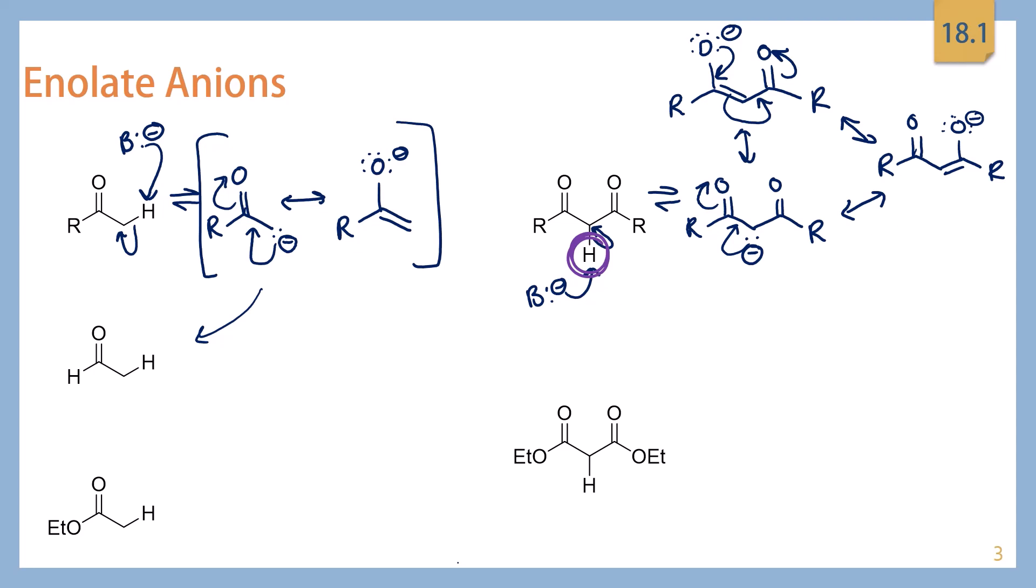Now the ester had a higher pKa than that of the aldehyde or the ketone. And the reason why is when we pull off this proton and create our conjugate base, we still have the same type of resonance form as we had before, where the carbanion is in resonance with the pi electrons of the carbonyl.